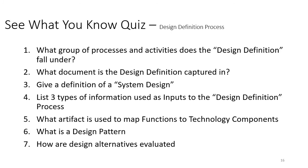We've come to the end of the video — an opportunity to test what you know. What group of processes and activities does the design definition fall under? What document is the design definition captured in? Give a definition of system design. List three types of information used as inputs to the design definition process. What artifact is used to map functions to technology components? What is a design pattern? And how are design alternatives evaluated? Hit pause to jot down your answers, then hit play to go to the next slide with the answers.